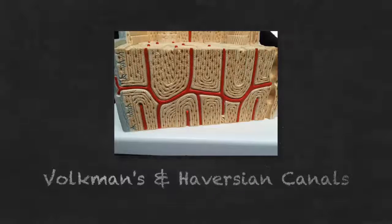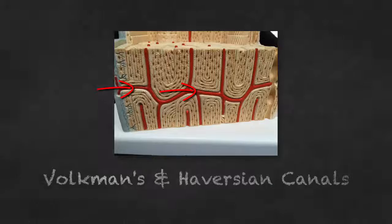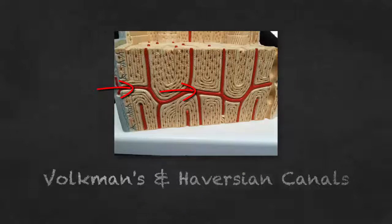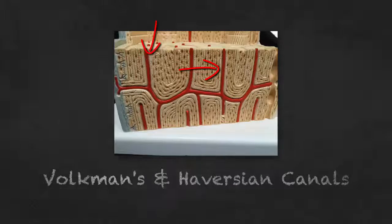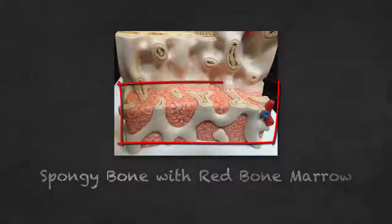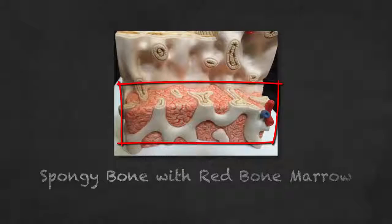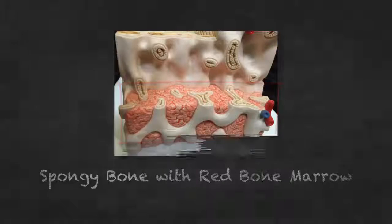The horizontal blood vessels are known as Volkmann's canals, or perforating canals. The vertical blood vessels are known as central canals, or Haversian canals. This section of the model shows spongy bone filled with red bone marrow.